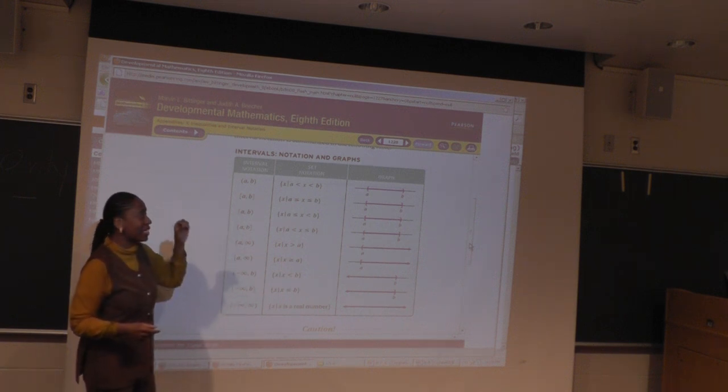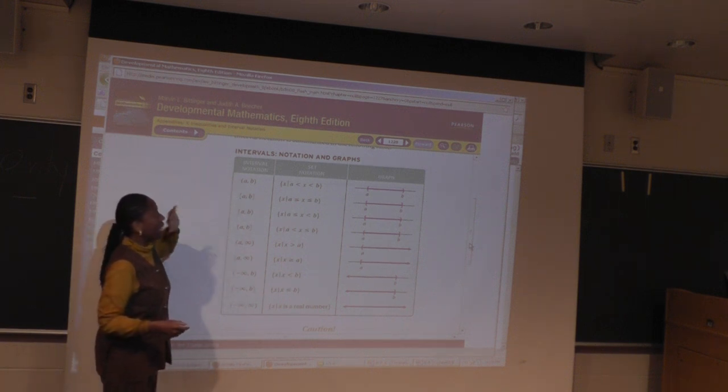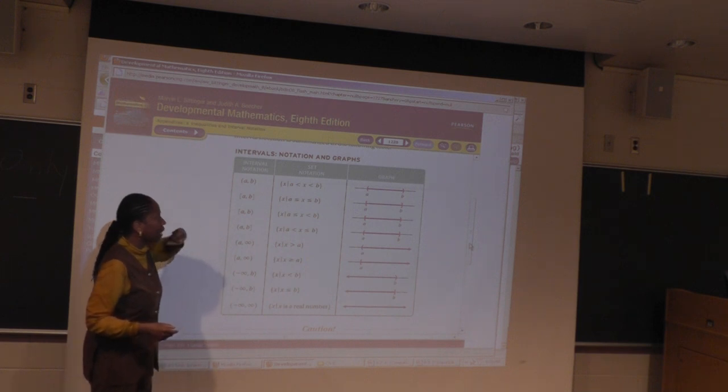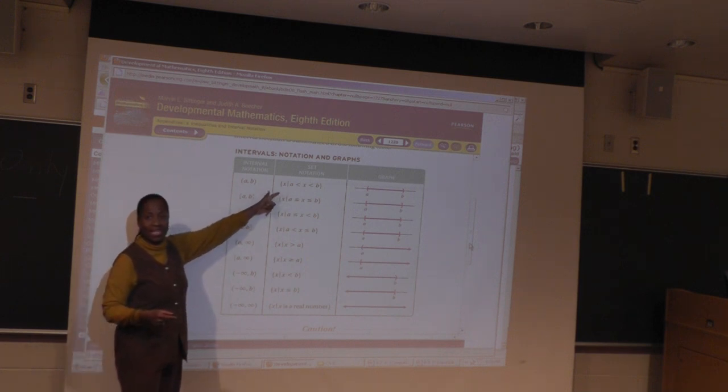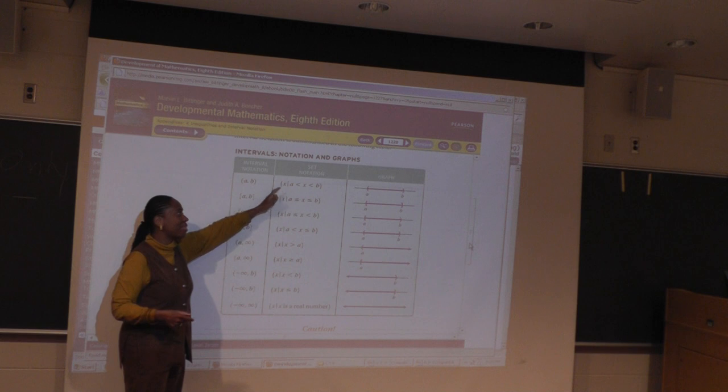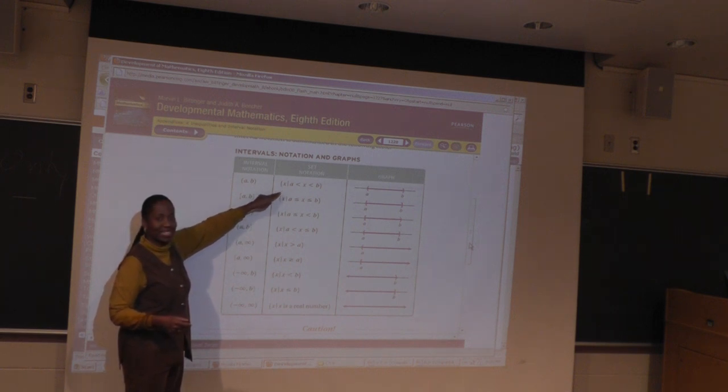So this chart basically tells you, it gives you the interval notation, then it tells you what it looks like in set builder notation. How do we say this? Again, remember how you say this?